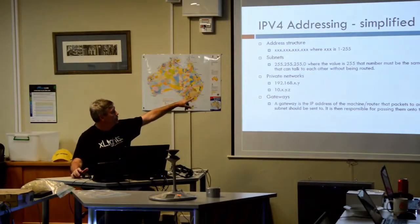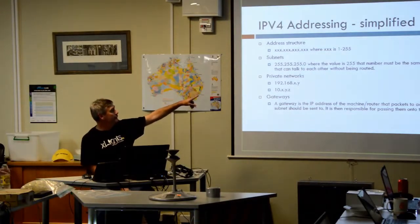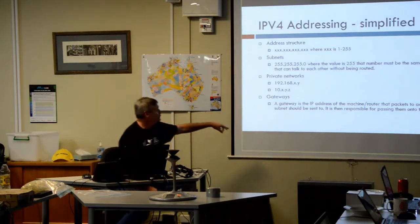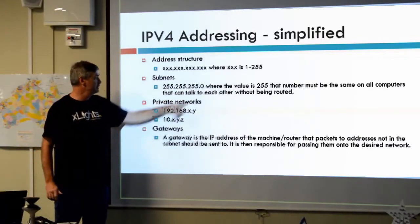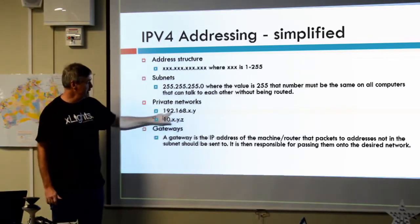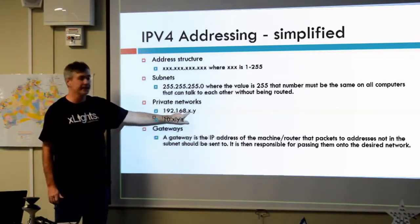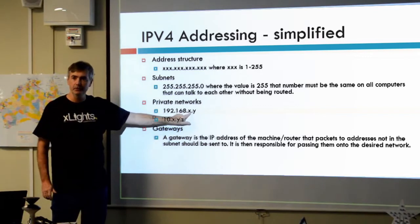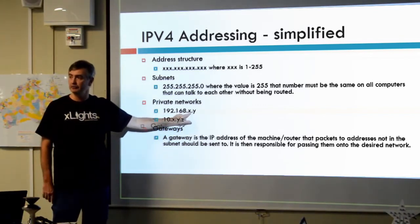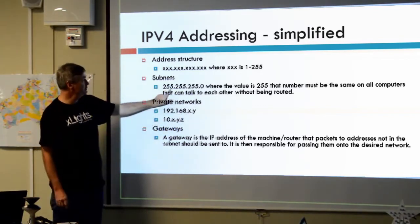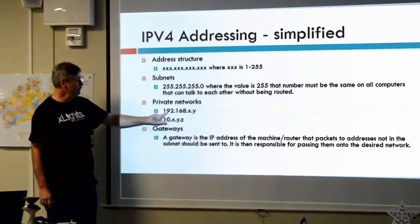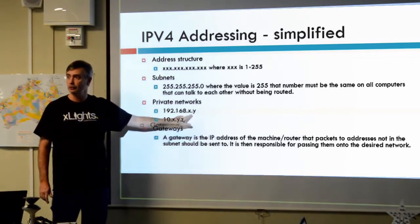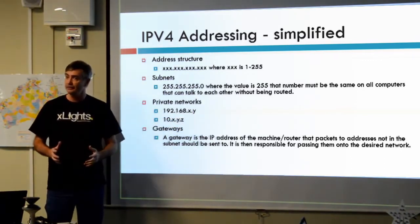The way a subnet works is it acts like a mask. So if you have a subnet of 255.255.255.0, that means the first three numbers — so the 192.168 and the X — have to be the same on two machines in order for them to talk to one another. If the subnet was 255.255.0.0, then 192.168 and any two numbers could talk directly to each other. That's how subnets work.